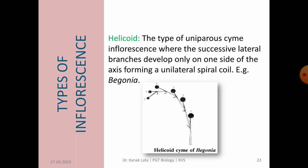Next is helicoid inflorescence. In this case, successive lateral branches develop on one side only and it forms a unilateral spiral coil-like structure. It is seen in Begonia. In the given figure, you may observe the pattern of helicoid cyme.